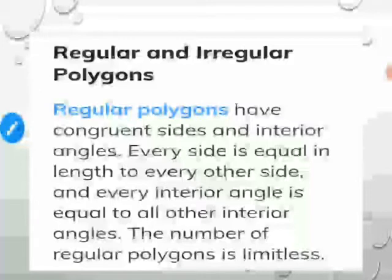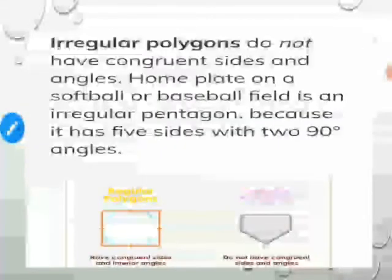The types of polygons: regular and irregular. Regular polygons have congruent sides and interior angles. A polygon which has all its sides of equal length and all its interior angles of equal measure is called a regular polygon. Examples are an equilateral triangle, where all sides and angles are equal, and a square, which also has all sides and angles equal.